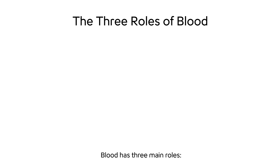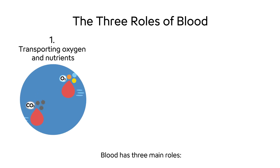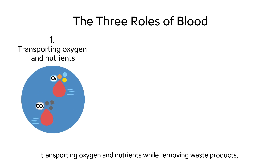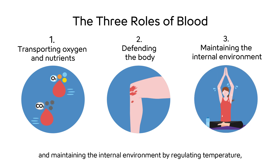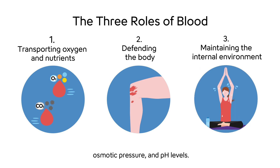Blood has three main roles: transporting oxygen and nutrients while removing waste products; defending the body by eliminating foreign substances such as bacteria and blood clotting; and maintaining the internal environment by regulating temperature, osmotic pressure, and pH levels.